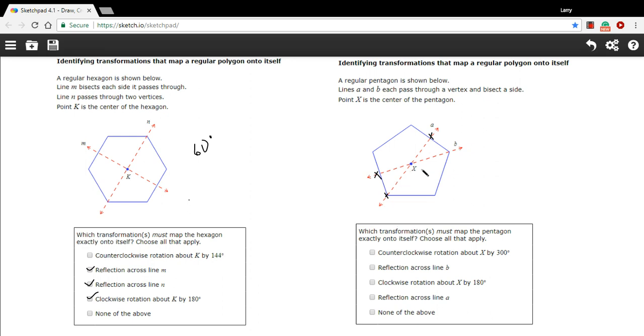So it looks like reflections over either of these lines will work, so that's here: reflection across B, reflection across A. So what are our other choices? Counterclockwise rotation of 300 degrees. So how do we figure that out? Well again, we've got five equal sides, so we'll take all of the degrees in a circle, 360, and divide it by 5, and we've got 72.